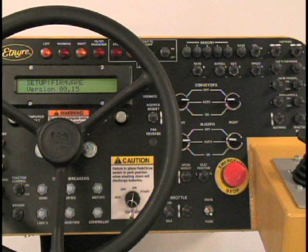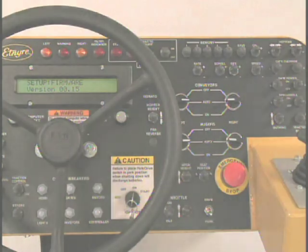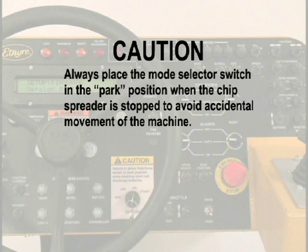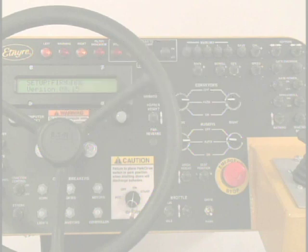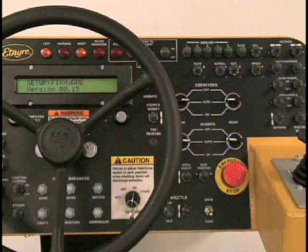The setup of the computer should be performed with the ignition key on but the engine not running, except for calibrating the gates and the speed. Always place the mode selector switch in the park position when the chip spreader is stopped to avoid accidental movement of the machine. These screens are used to configure the computer to the particular chip spreader and to calibrate the joystick and the gates.